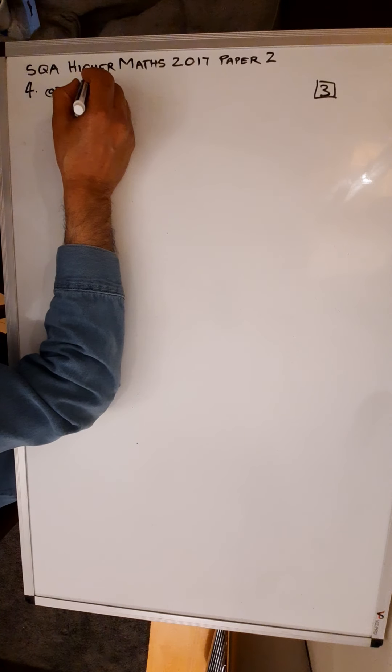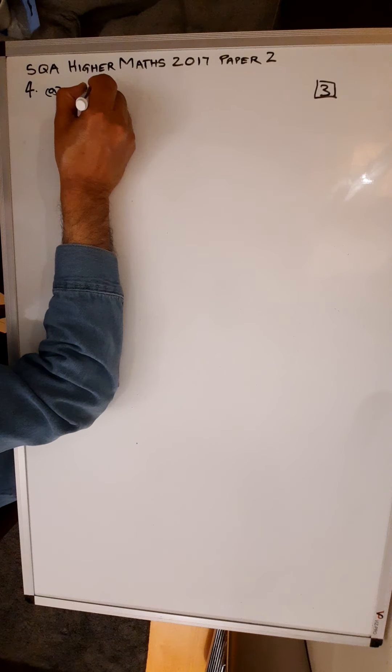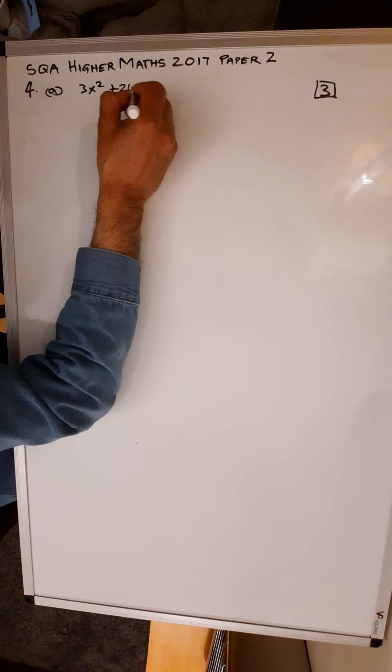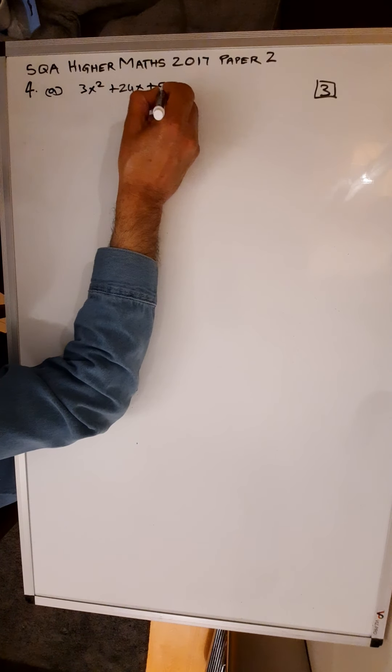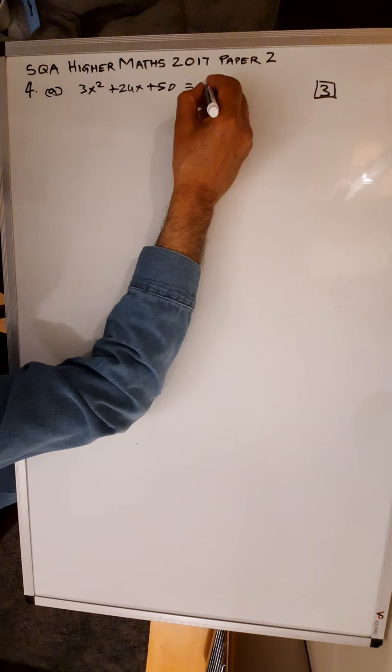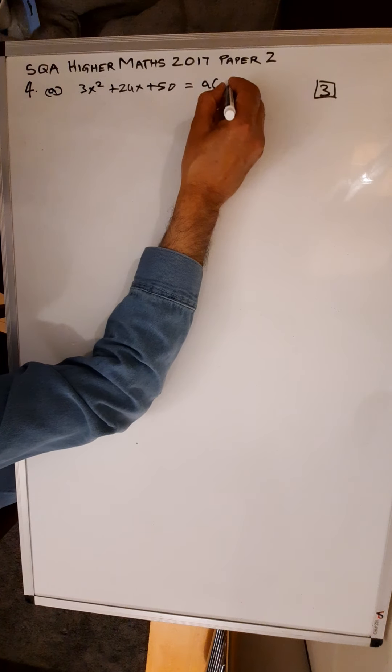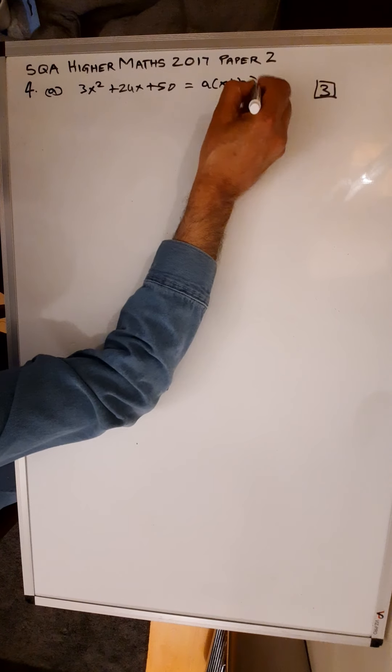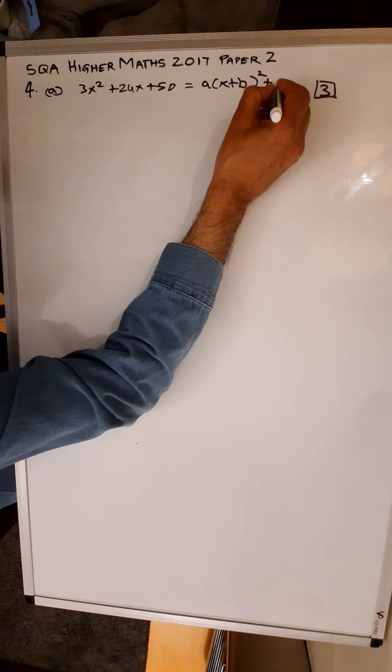Express 3x squared plus 24x plus 50 in the form A times (x plus B) all squared plus C.